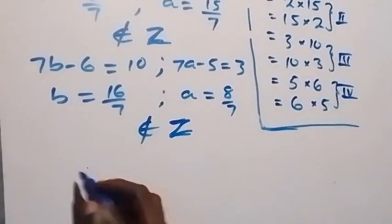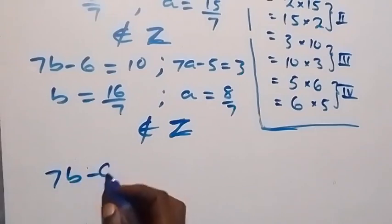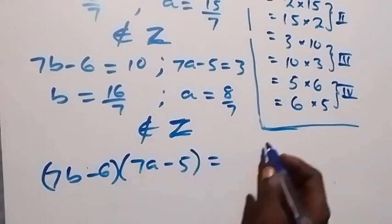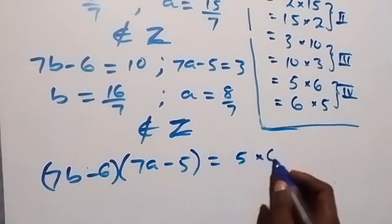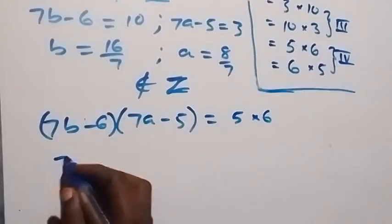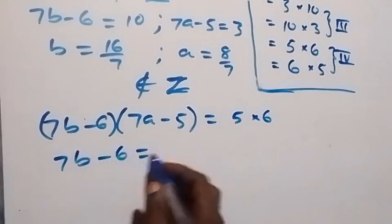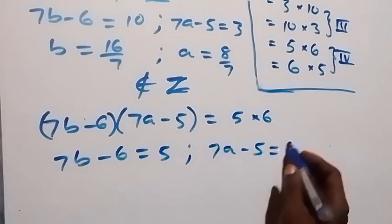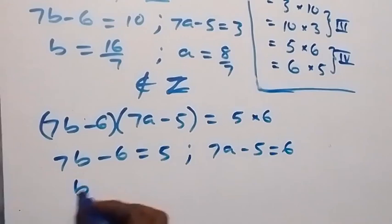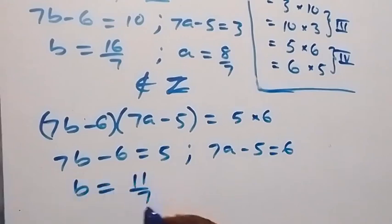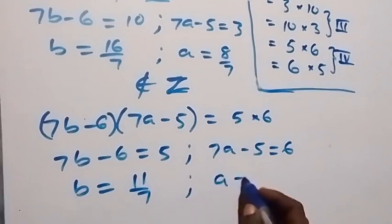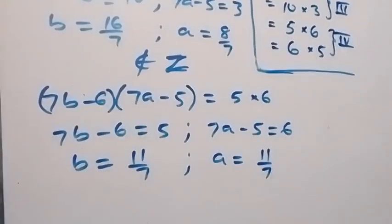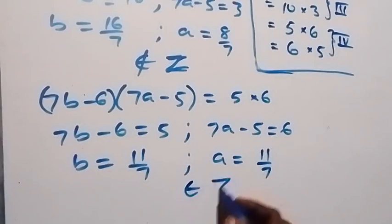For Case 4: (7b minus 6) times (7a minus 5) equals 5 times 6. We equate 7b minus 6 equals 5 and 7a minus 5 equals 6. Solving gives b equals 11 over 7 and a equals 11 over 7 — these are not members of the integer solution.